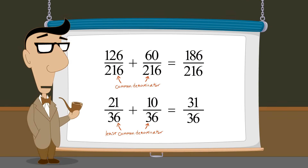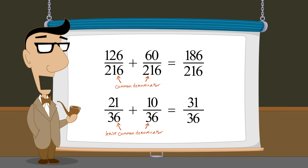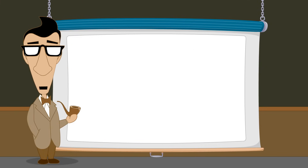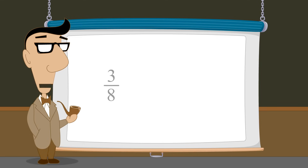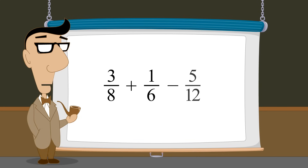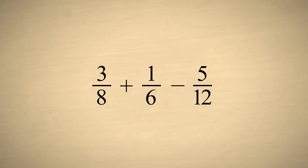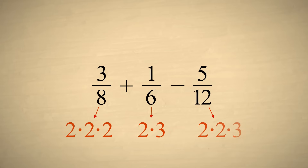The power of using the least common denominator is especially apparent when we add or subtract more than two fractions. For example, let's calculate three-eighths plus one-sixth minus five-twelfths. We first factor each denominator.